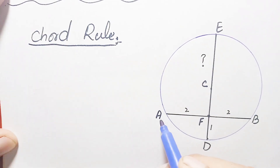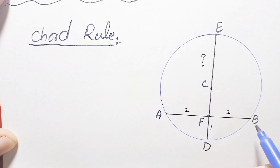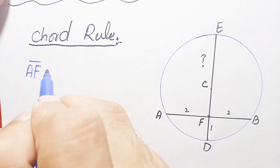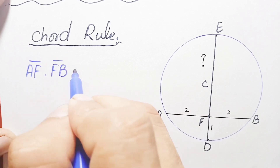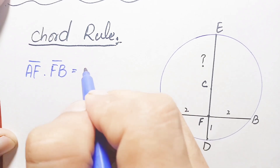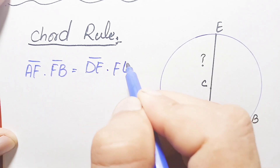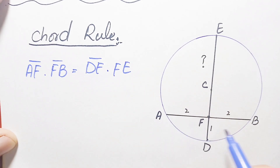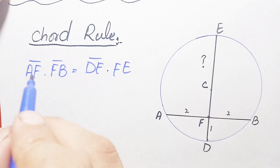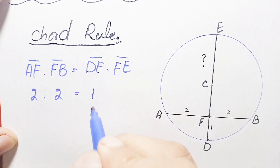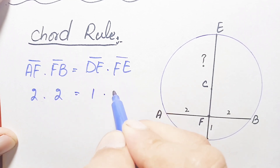Applying the chord rule: AF × FB = DF × FE. Substituting the known values: AF and FB are each two units, and DF is one unit. So the equation becomes 2 × 2 = 1 × FE.